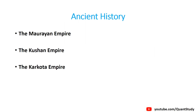Kashmir's ancient history is based on three dynasties: the Maurya Empire, the Kushan Empire, and the Karkota Empire. In this video, we will talk about the founders and developments of these three empires in Kashmir. But before that, we will talk about a very important person who helps us understand these three dynasties and their rule in Kashmir.